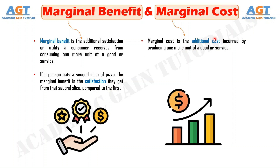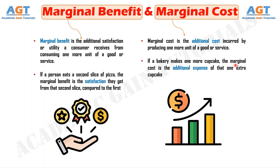On the other hand, marginal cost is the additional cost incurred by producing one more unit of a good or service. If a bakery makes one more cupcake, the marginal cost is the additional expense of that one extra cupcake.